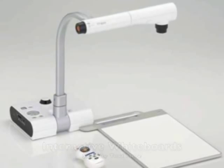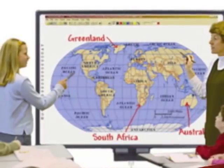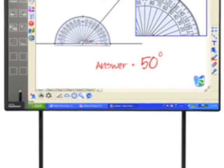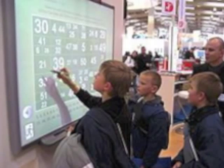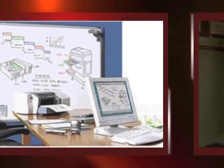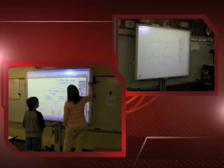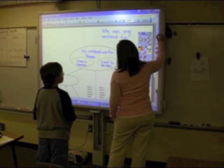An interactive whiteboard is a recent technology that can be used in conjunction with document cameras. It is a large interactive display that connects to the computer and the projector. The projector projects the computer's desktop onto the board surface where users can control the computer using a pen or their finger. Teachers and students can use the pointer or other device to activate programs, buttons, and menus from the whiteboard itself, just as one would normally use a mouse.